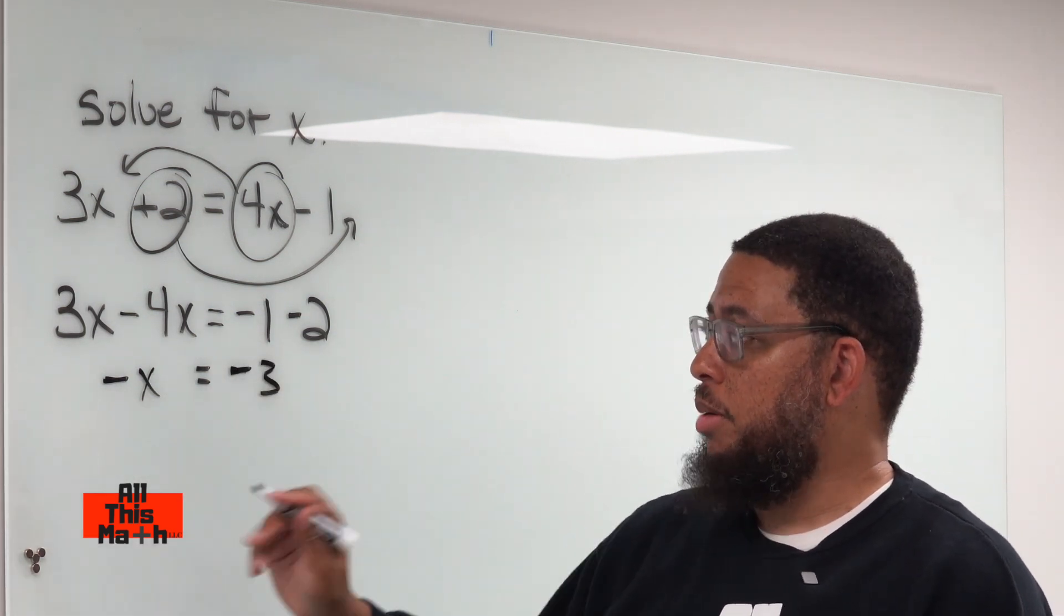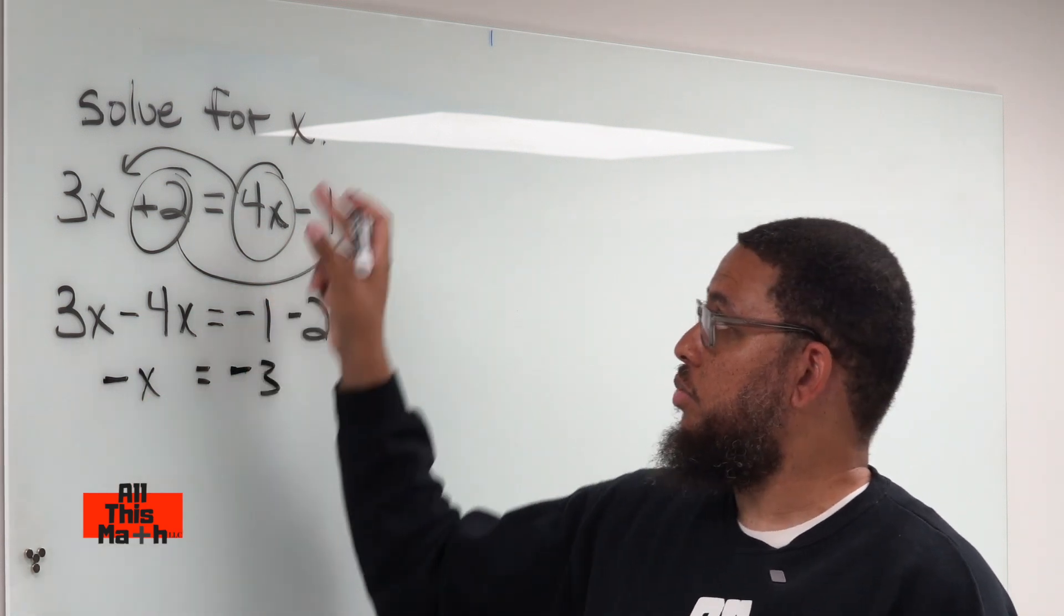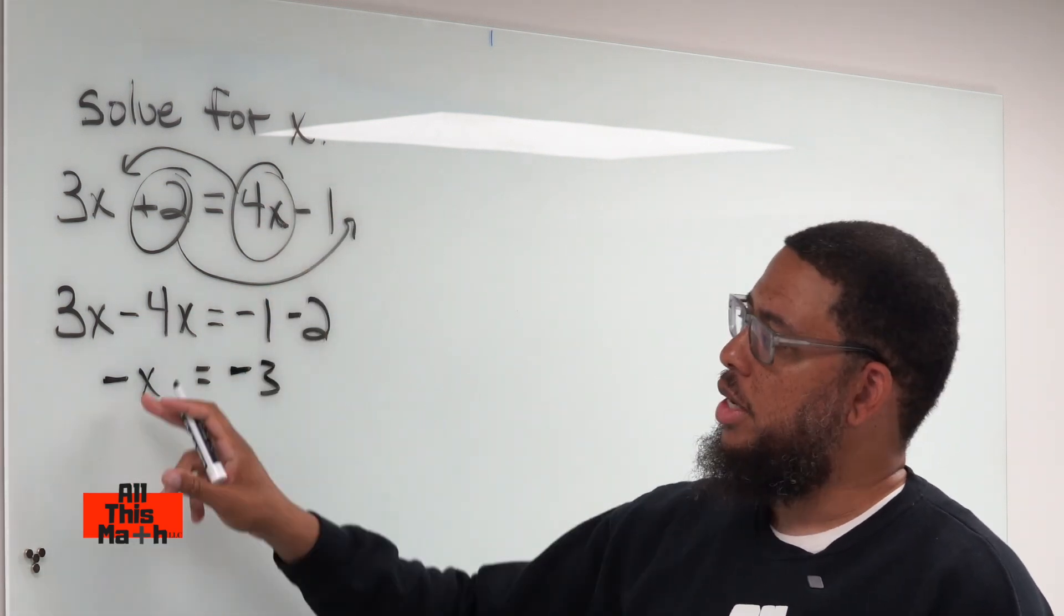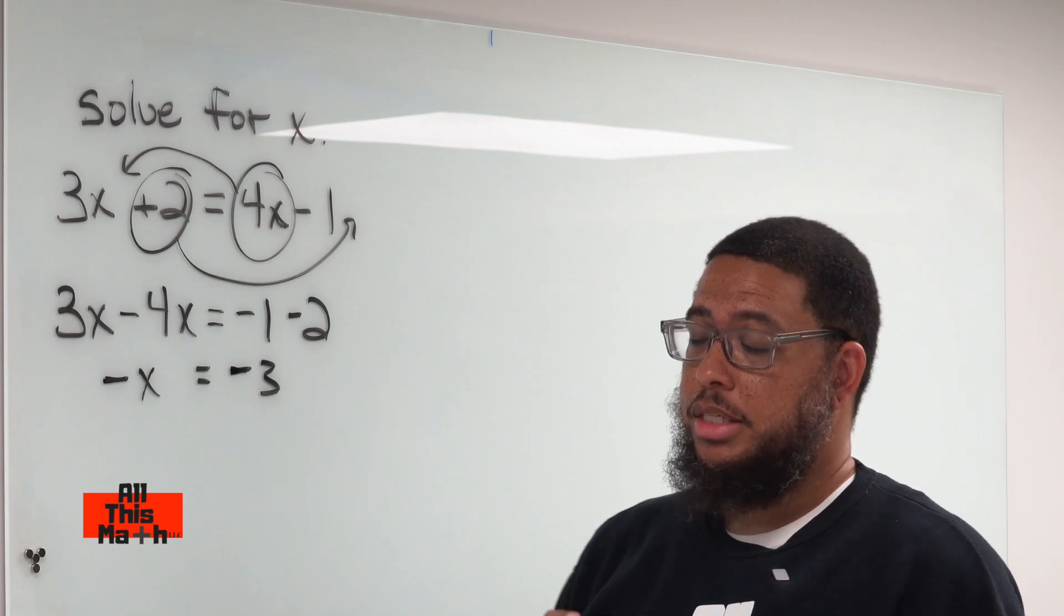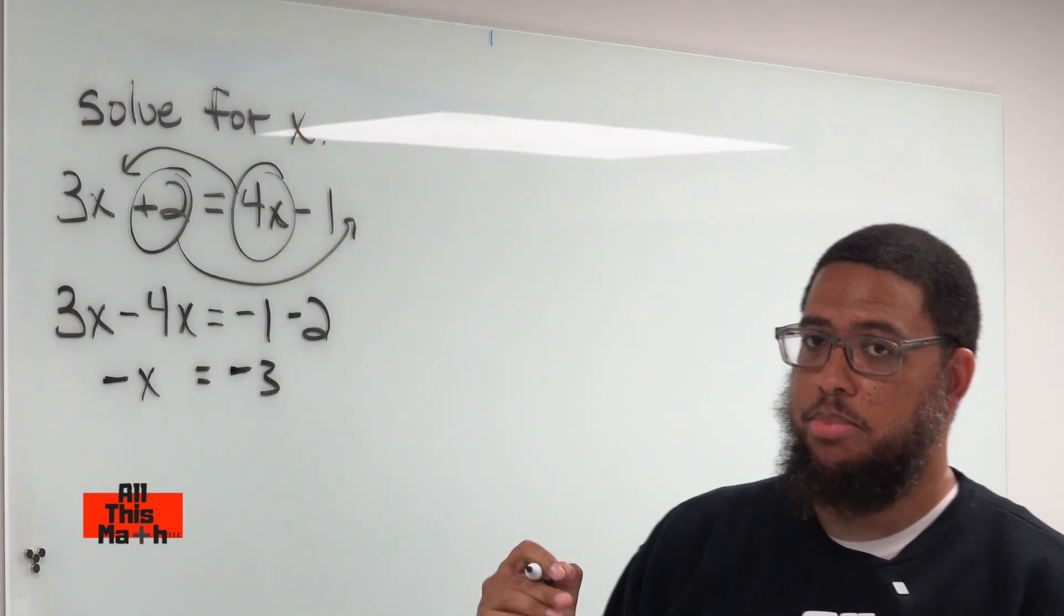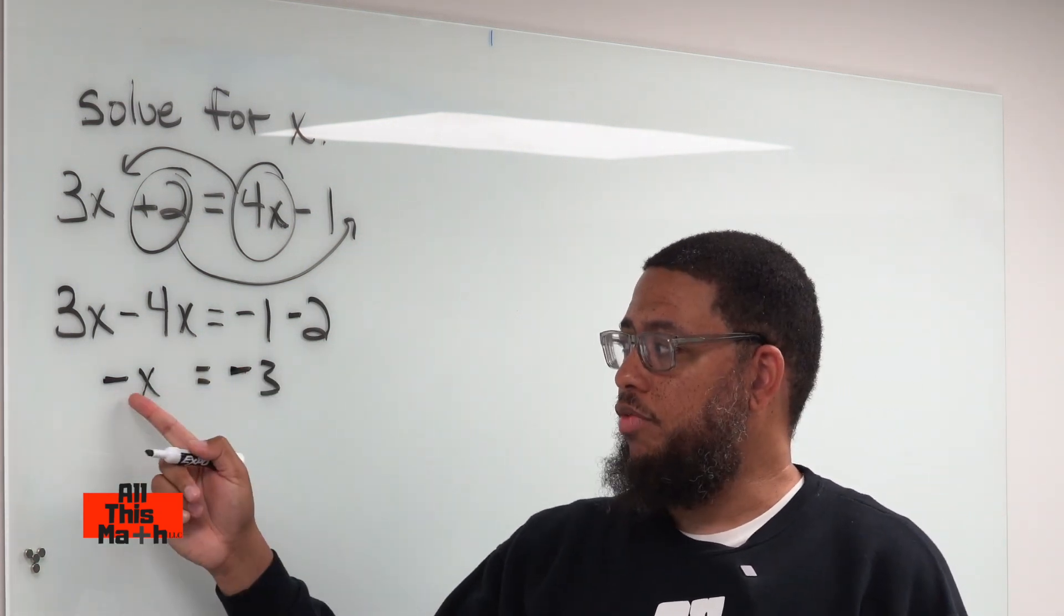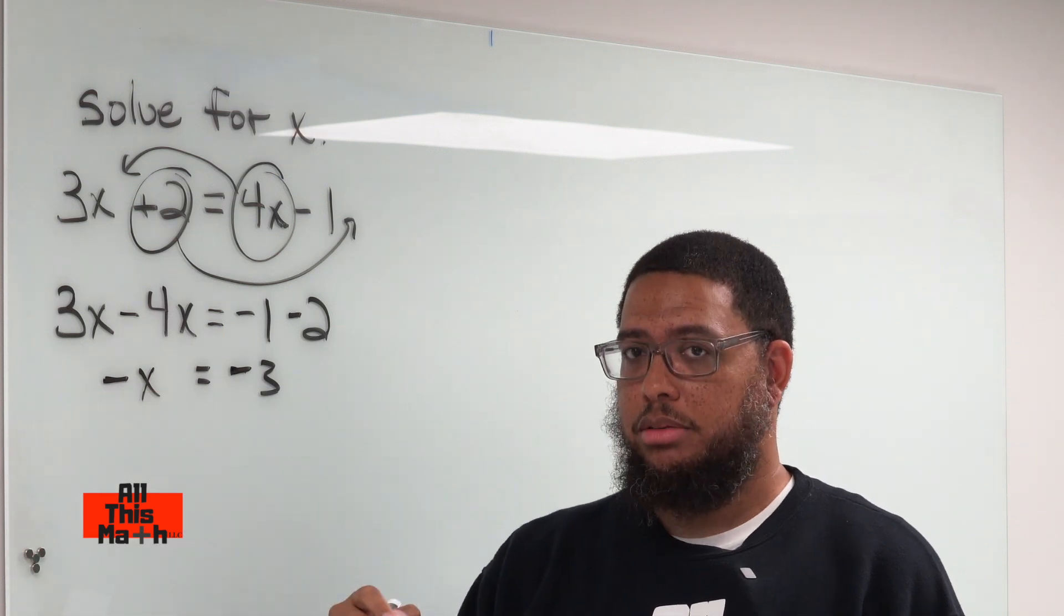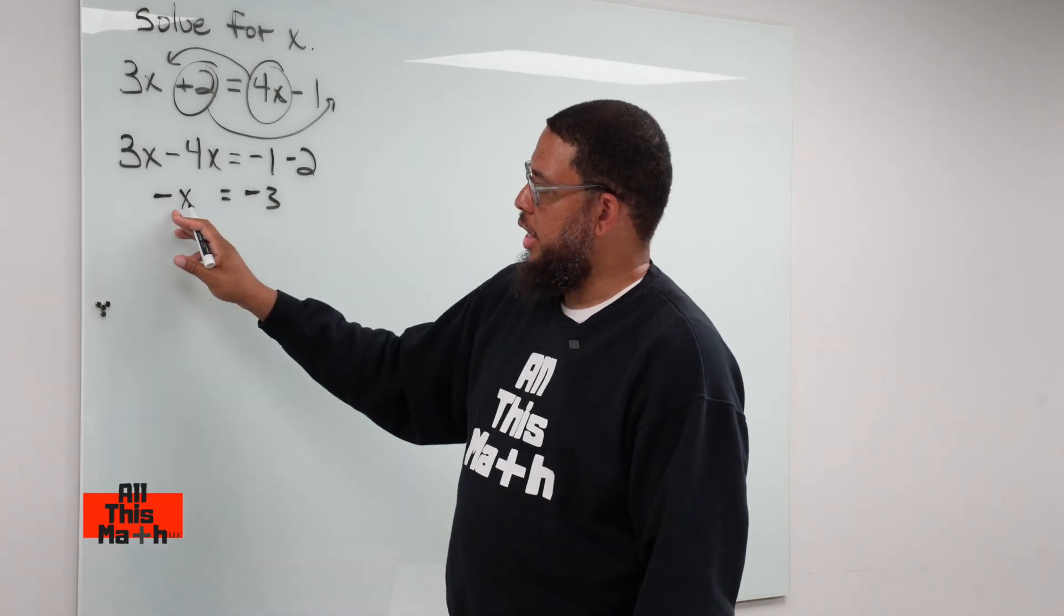And we're almost done. Because remember, we're not trying to solve for negative x, we're trying to solve for x, which is positive x. So how do we get rid of this negative sign? Something I want you to understand, this negative sign actually represents a negative 1. Negative x really means negative 1x.